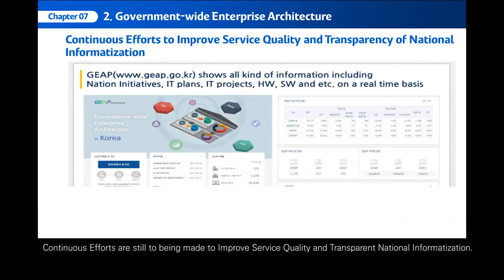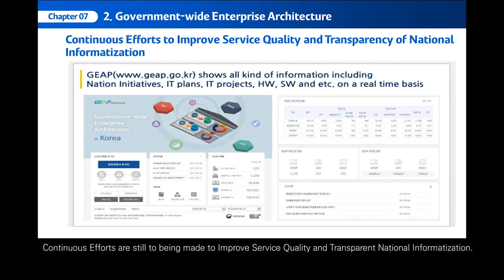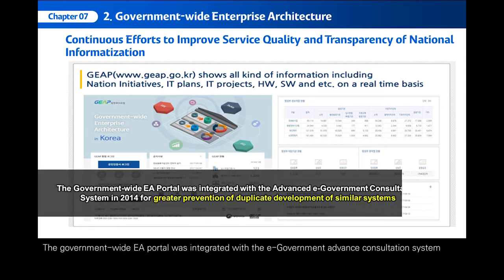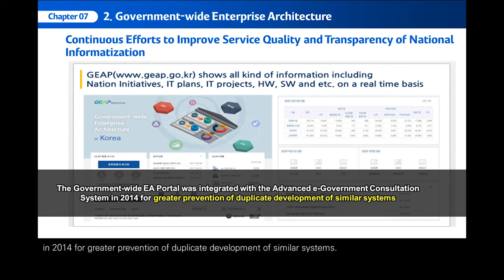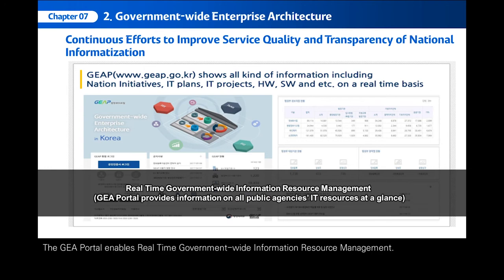Continuous efforts are still being made to improve service quality and transparent national informatization. The government-wide EA portal was integrated with the e-government advanced consultation system in 2014 for greater prevention of duplicate development of similar systems. The GEA portal enables real-time, government-wide information resource management and provides information on all public agencies' IT resources at a glance.